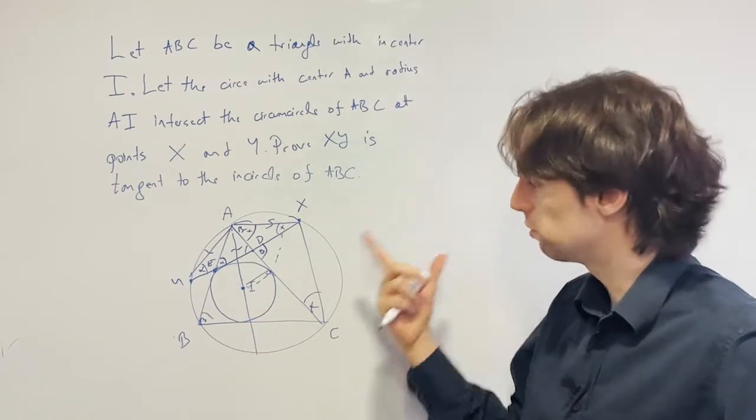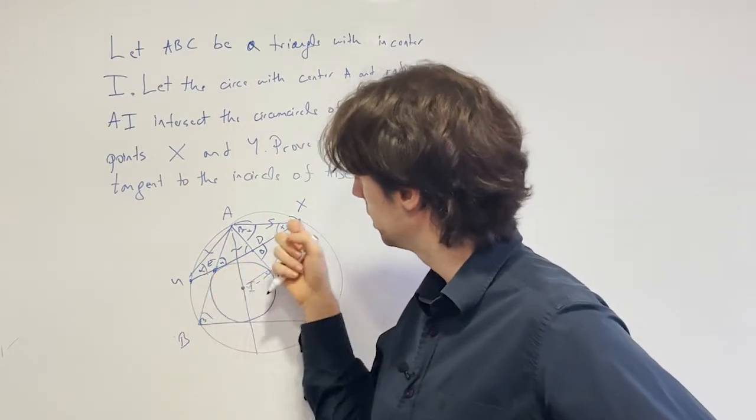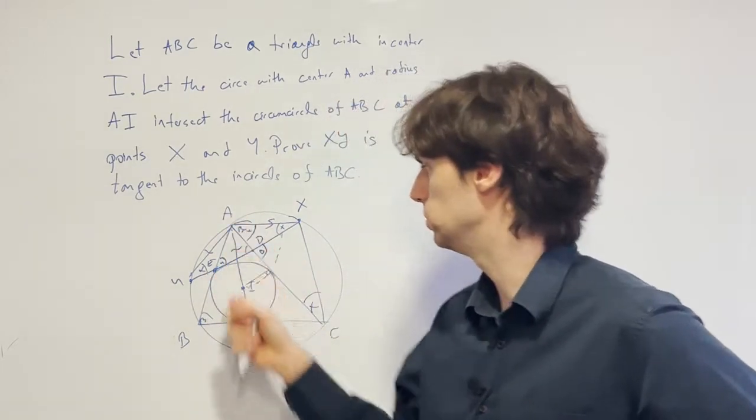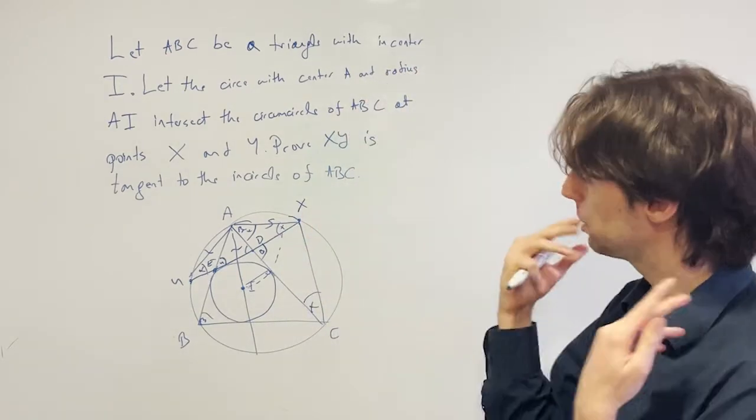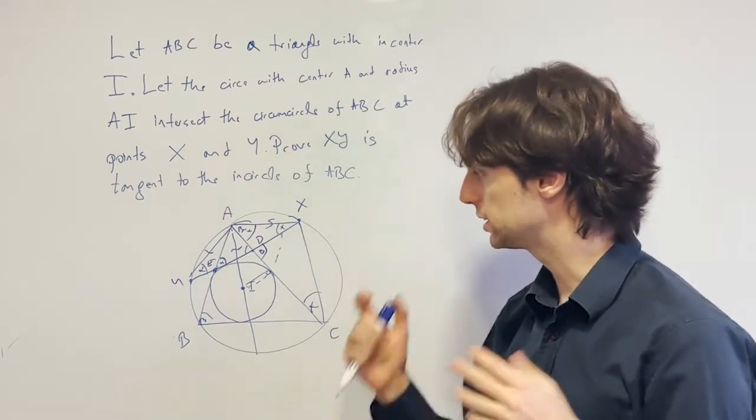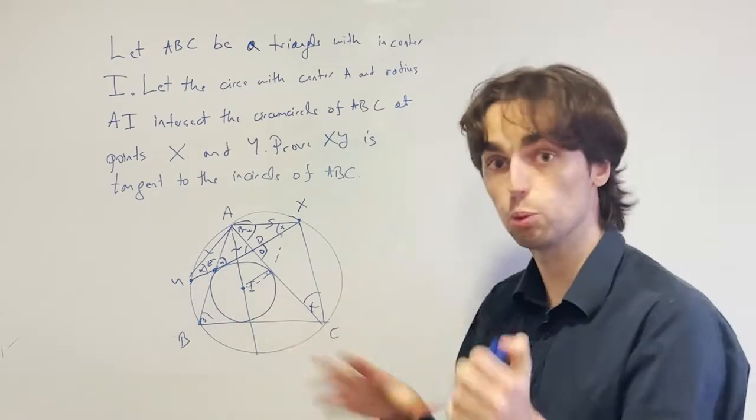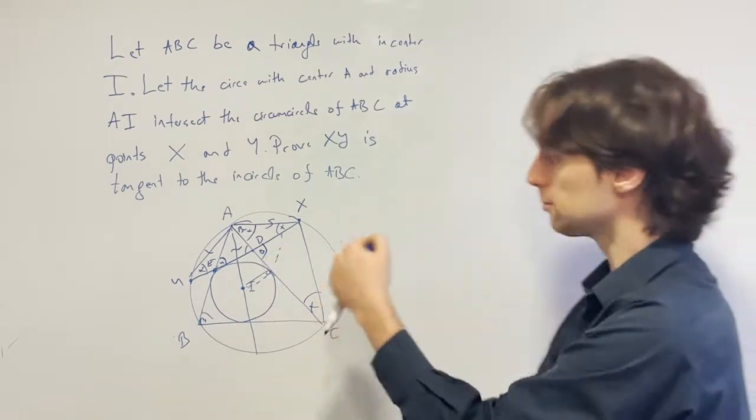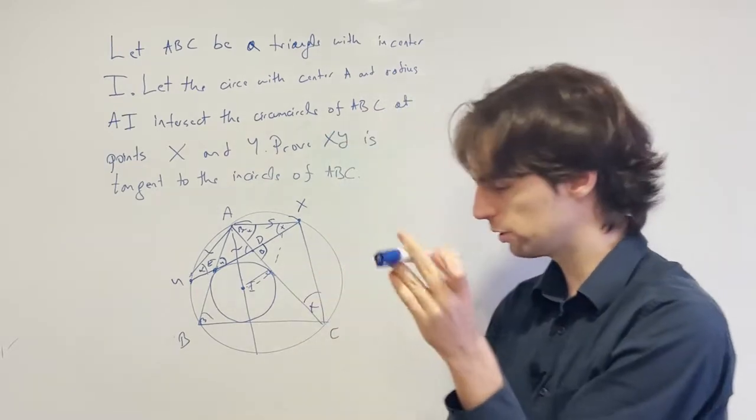The only thing we really used so far is the fact that AX is AY. We did not use AI as equal to these at all. And this is also important to keep track because usually, not always, but usually the problems like every single thing that's a condition is used. And it's usually important to keep track of which conditions you're using. So here we use the fact that this is equal to this. And now my question for you is,